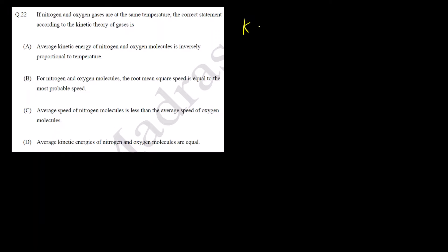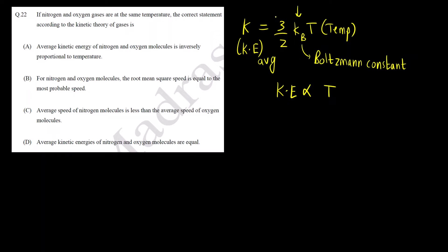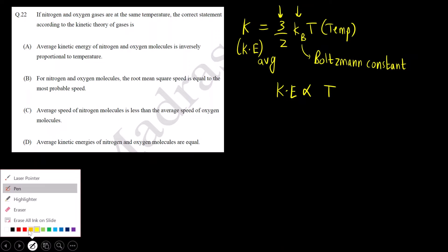First: average kinetic energy of nitrogen and oxygen is inversely proportional to temperature. For this, you must know the formula for average kinetic energy: K = (3/2) Kb·T, where Kb is the Boltzmann constant and T is the temperature. You can see that average kinetic energy is directly proportional to temperature — 3/2 is also a constant. So it is directly proportional to temperature, but the option states inversely proportional. Therefore, this option is incorrect.